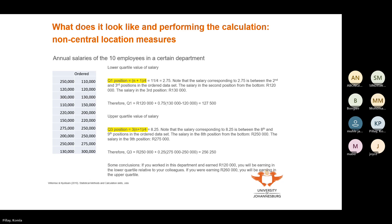11 divided by 4 is 2.75. But this is the position, not the value — you still need to work out the value. To get quartile one for a data set of 10, you look at position 2.75, which is not a whole number. So we need to determine how to calculate the value at position 2.75.